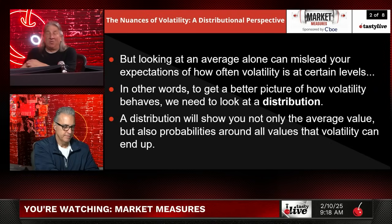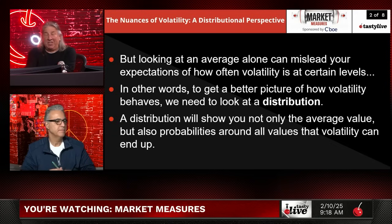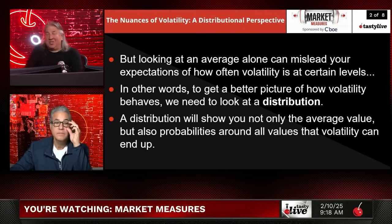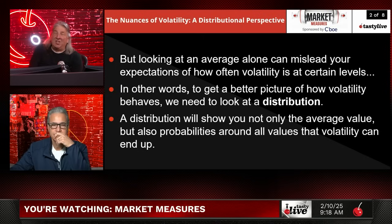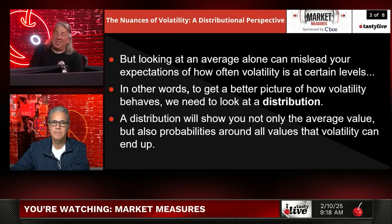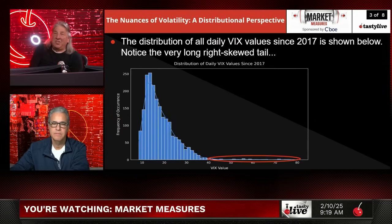What's interesting is our old research — and this may be updating it — used to show that volatility on a distribution basis would go up about 10% of the time, go down about 20% of the time, and stay in a low state about 70% of the time. Let's see how this latest piece of research lines up with that.